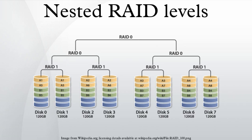RAID 53 is typically used as a name for RAID 30, or RAID 0+3. RAID 60 combines the straight block-level striping of RAID 0 with the distributed double parity of RAID 6 — that is, a RAID 0 array striped across RAID 6 elements. It requires at least 8 disks.